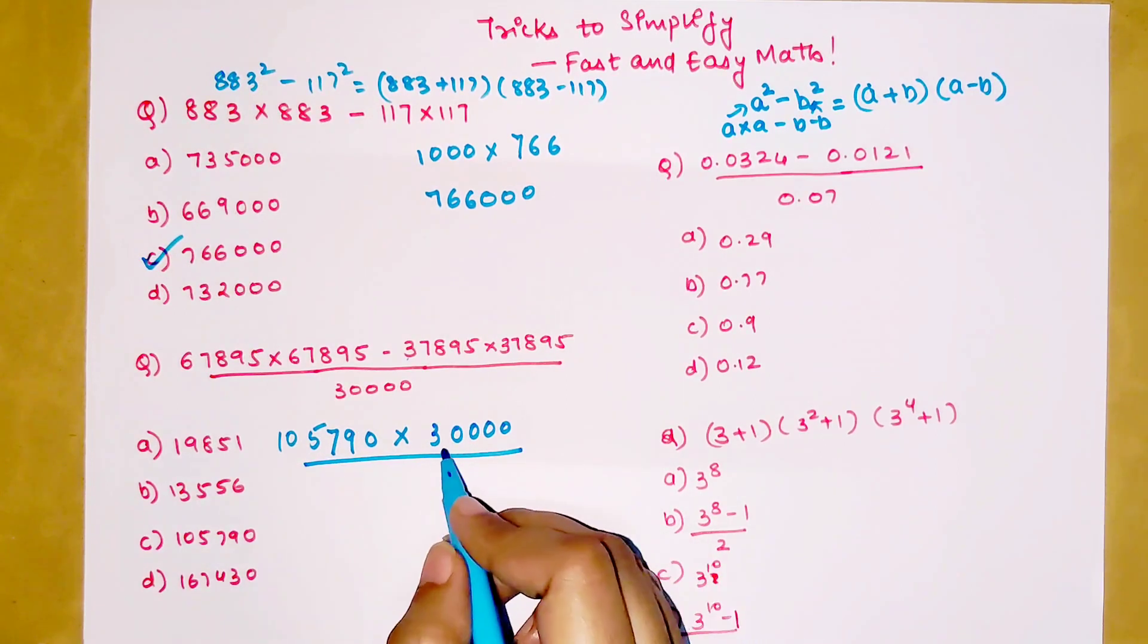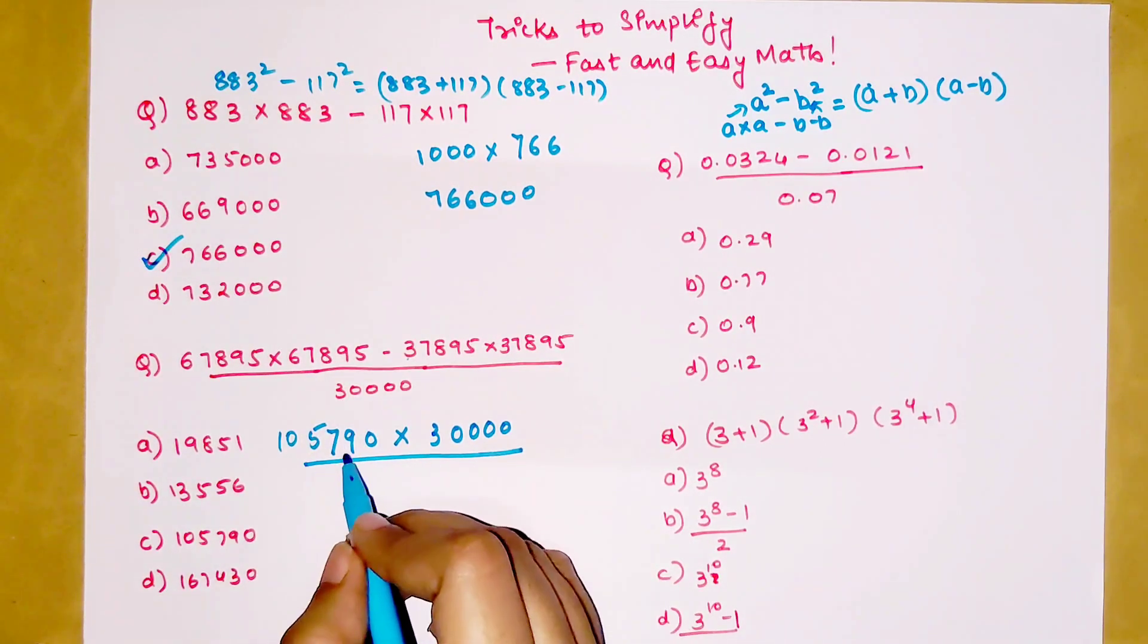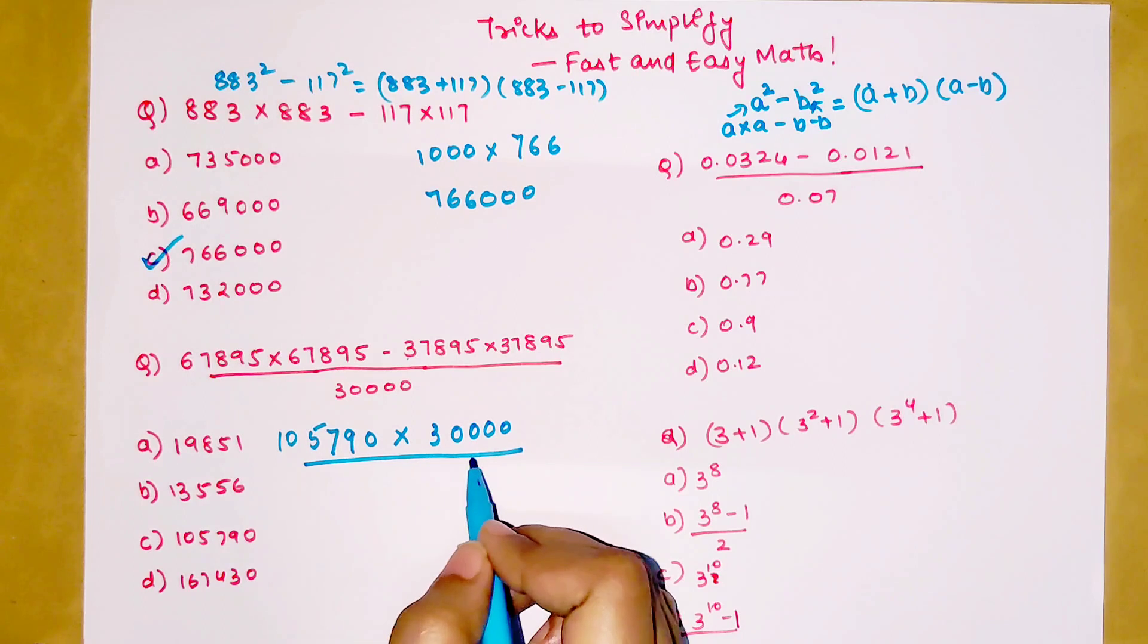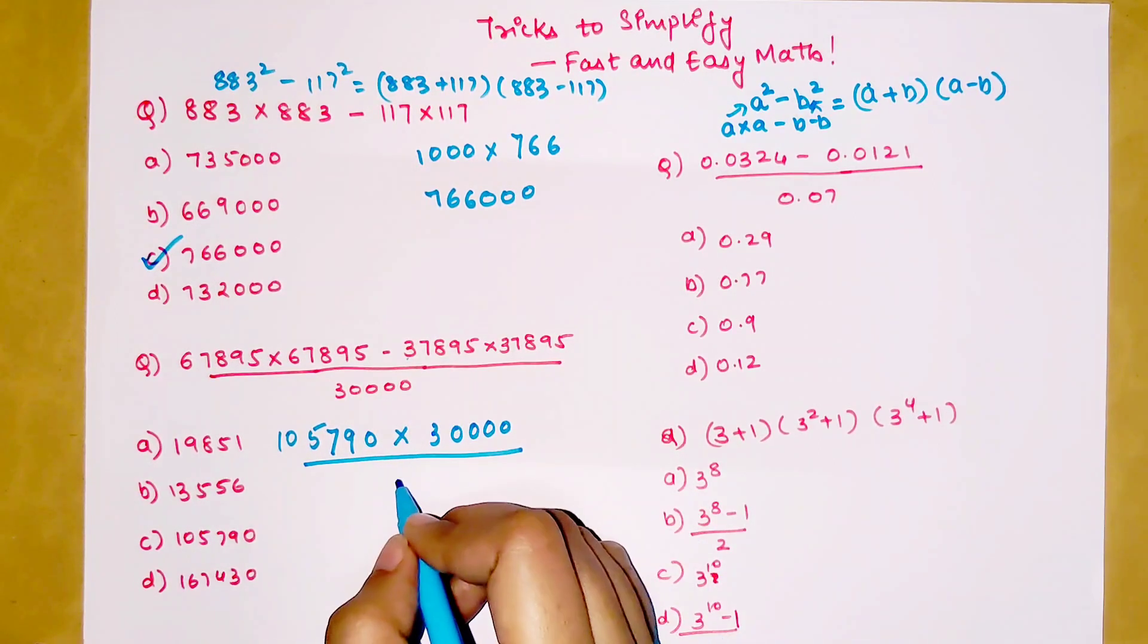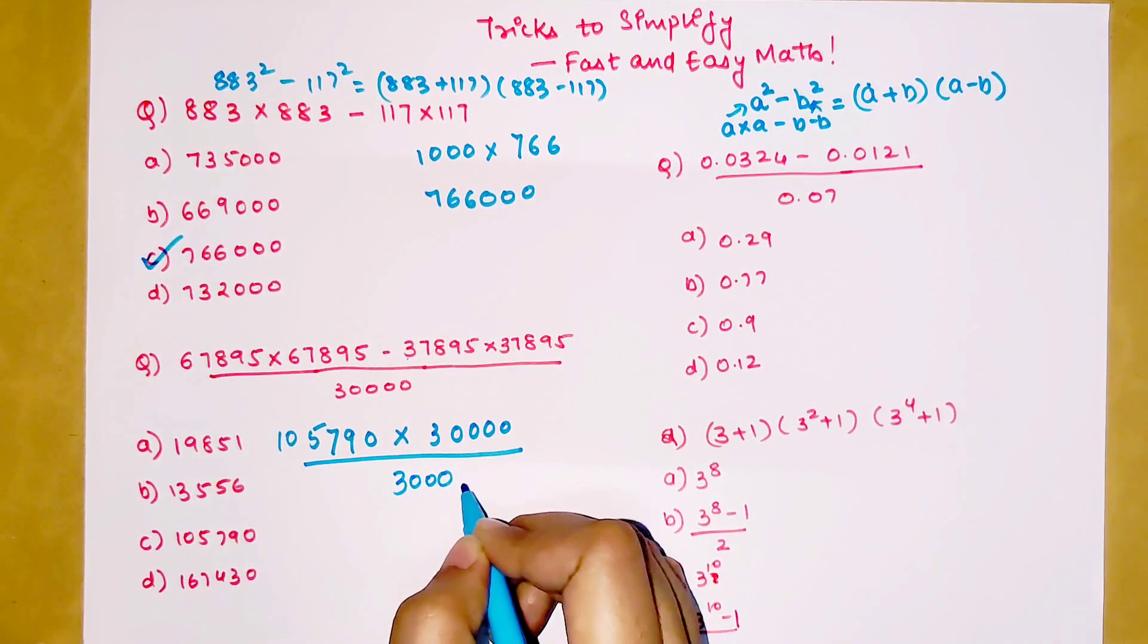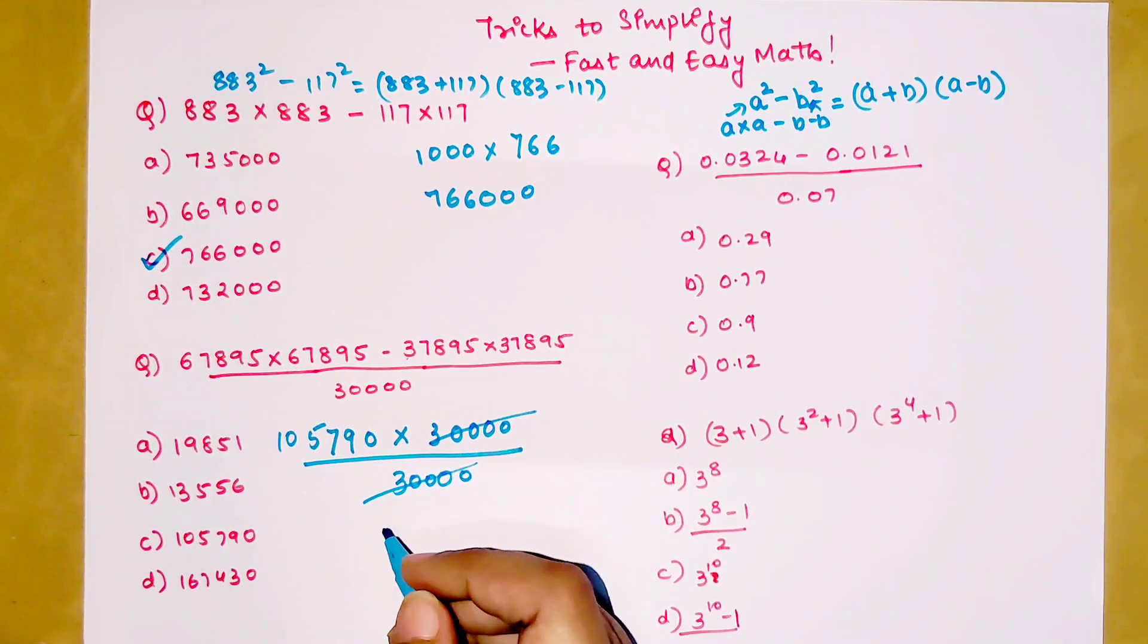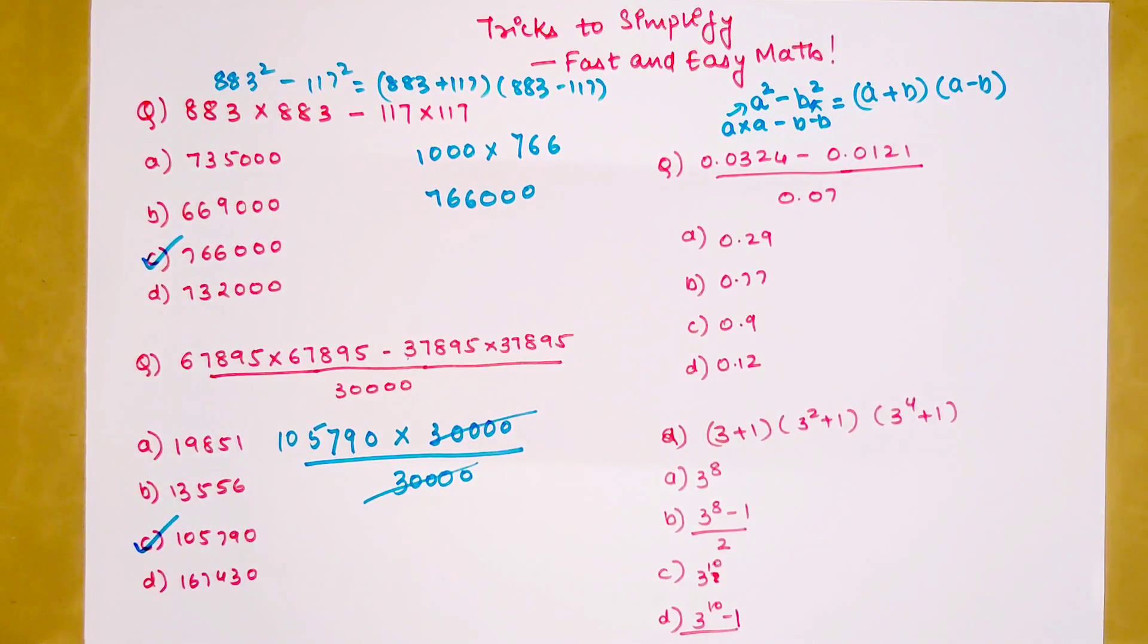You are getting 107,590 × 30,000 but the question also gets divided by 30,000, so this can simply cancel and your final answer is just option C.